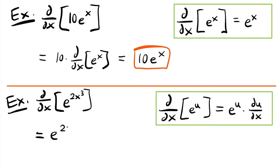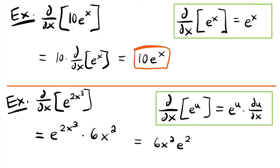We'll have e to the power of 2x cubed, and then we multiply by the derivative of that exponent. So we take the derivative of 2x cubed — using the power rule, we multiply the exponent down: 2 times 3 equals 6, and we have x to the power of 2 because we subtract 1 from the exponent (3 minus 1 is 2). So simplifying, this is equal to 6x squared times e to the power of 2x cubed.